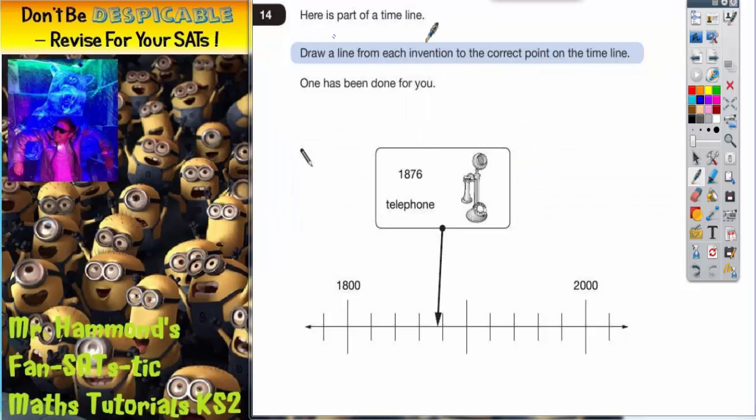Question 14. Here is part of a timeline. Draw a line from each invention to the correct point on the timeline. One has been done for you.